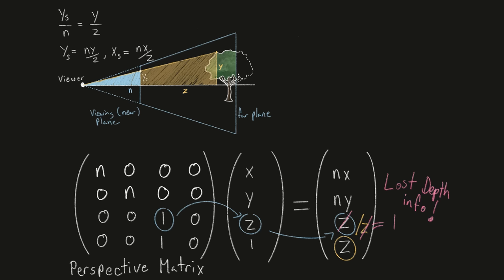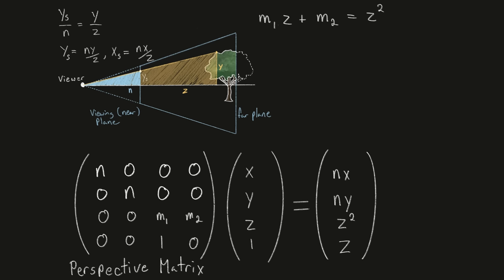So, rewind, and in reality we need the solution's z component to equal z squared, since z squared over z is equal to z. But in our matrix we only have two remaining unknown values to use. If we multiply this out, we get the equation m1 times z plus m2 equals z squared. This is a quadratic equation, meaning it has at most two real solutions, and can't be true for other z values.